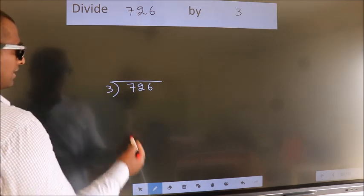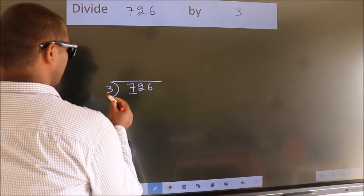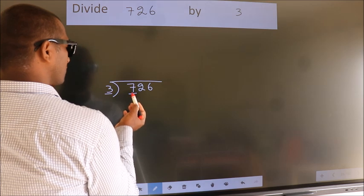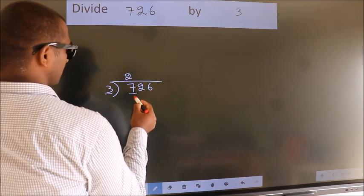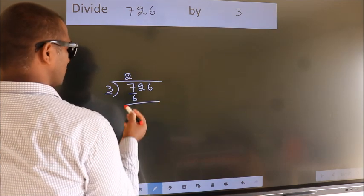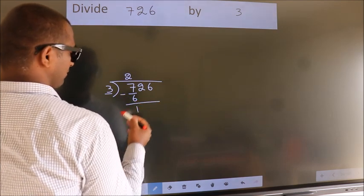Next, here we have 7. Here 3. A number close to 7 in 3 table is 3 times 2 is 6. Now we should subtract. We get 1.